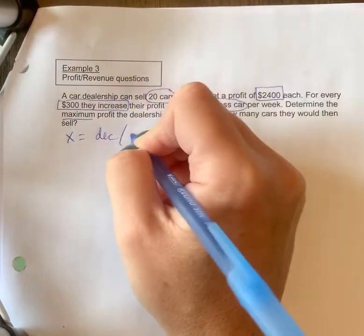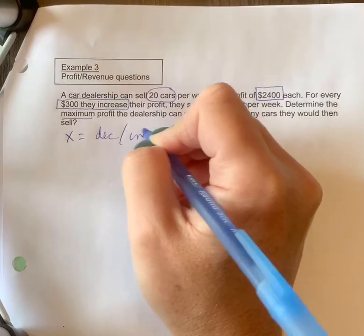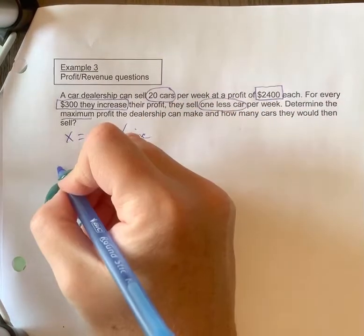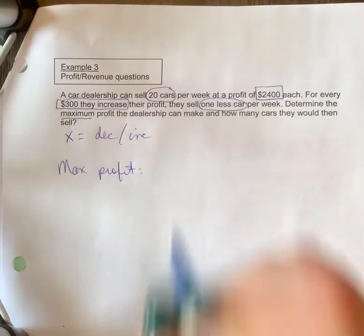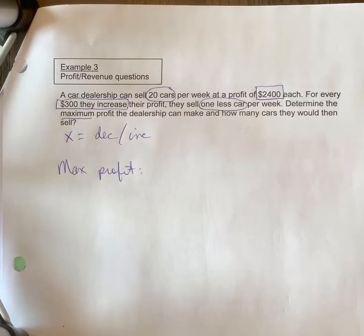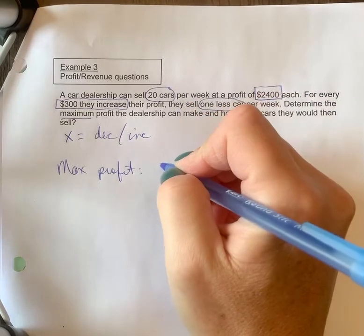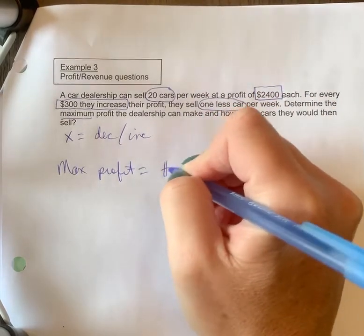Okay, so what does max profit mean? Well, I'm going to make money if I sell cars. If I sell two cars, I double my profit, so maximum profit is going to be based on the number of cars sold times the price per car.